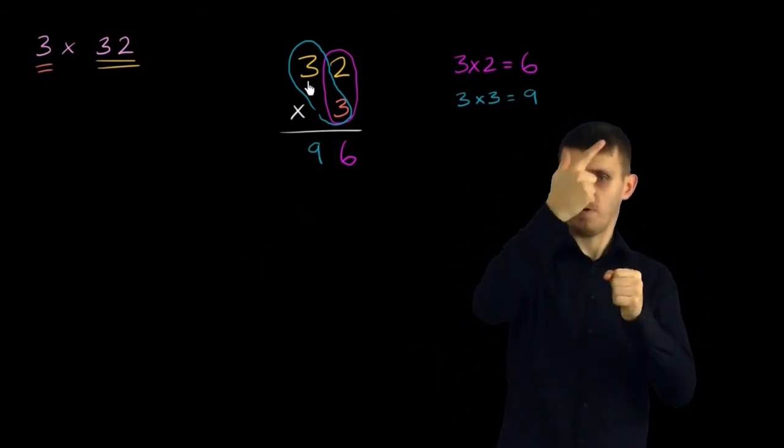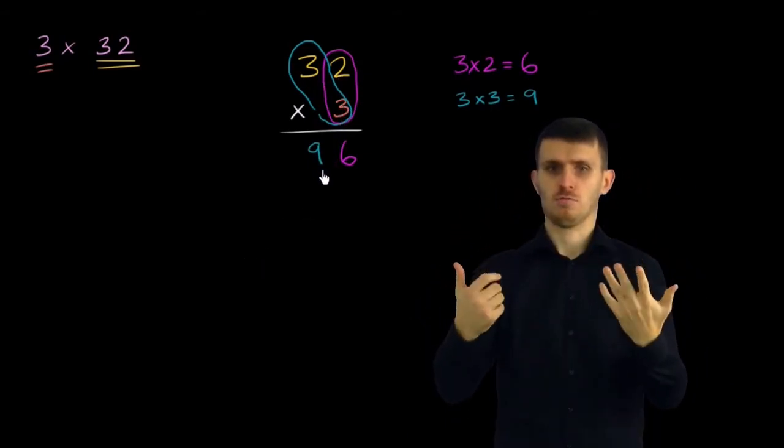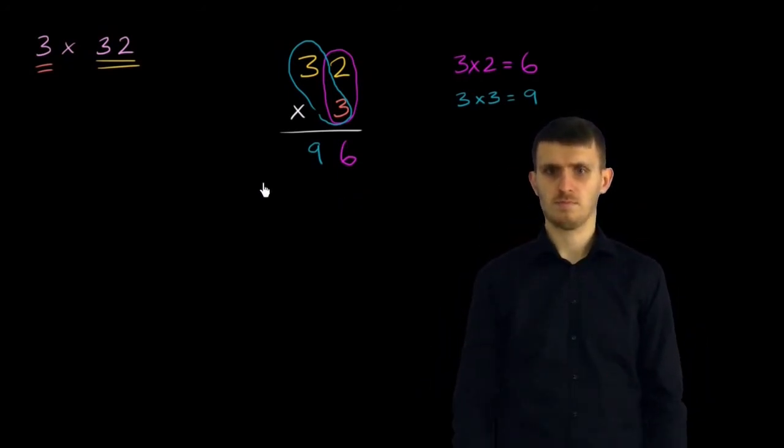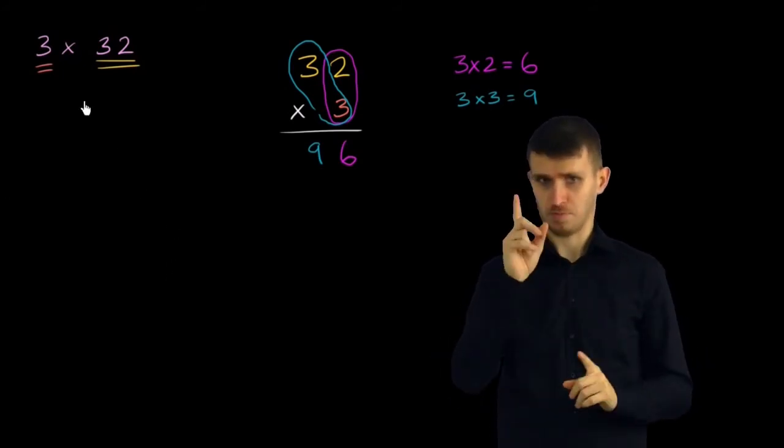So we're done. We got 32 times 3 is 96. And I really encourage you to think about why this worked. I'll give you a little bit of a hint about why this worked.